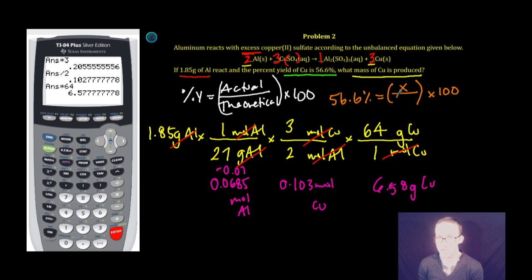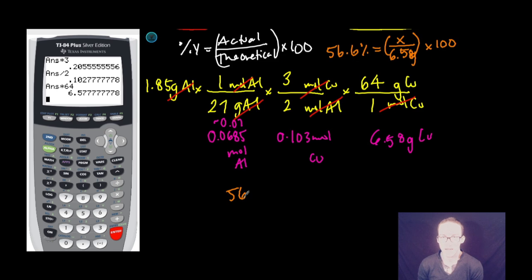Now remember, this is just theoretically how many grams of copper I should have made. But keep in mind, we should only expect a percent yield of 56.6%. So we shouldn't expect to get 6.58 grams. We should expect to only get 56.6% of that. So how do we solve for x? It just becomes an algebra problem.